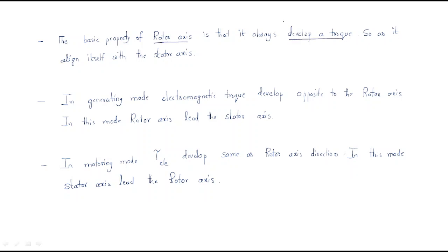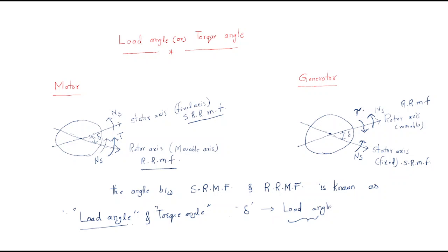The basic property of the rotor axis is that it always develops a torque. The rotor itself rotates, and the torque is applied as it tries to align itself with the stator axis. Generally, in generating mode, the electromagnetic torque developed is opposite to the rotor axis direction.